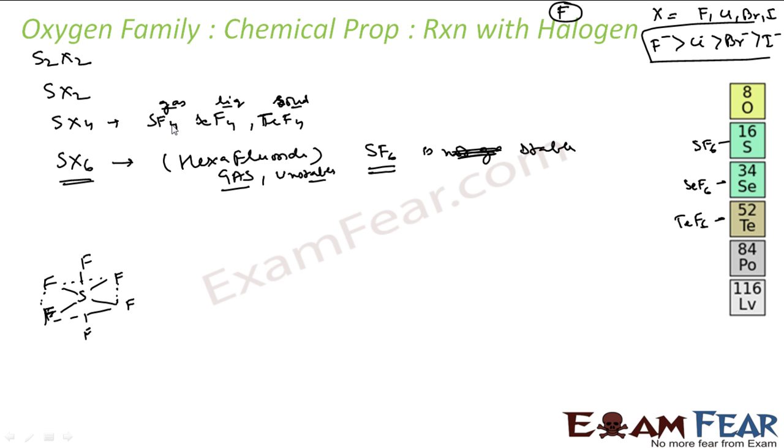Other example of SX4, you can take as STl4, that is also possible. And you know all these SX4, these are my SP3D hybridized. And because of this SP3D hybridization, they have trigonal bipyramidal shape. This SF6 is my octahedral.